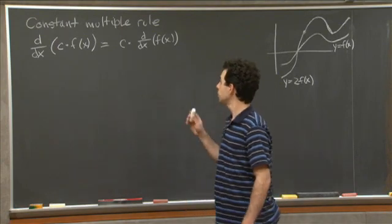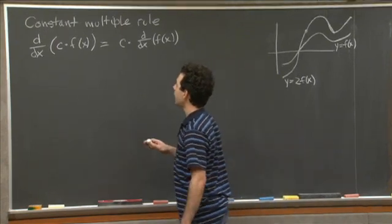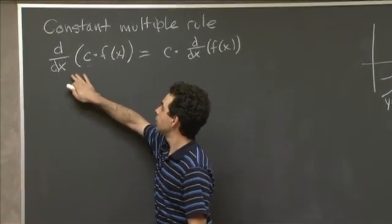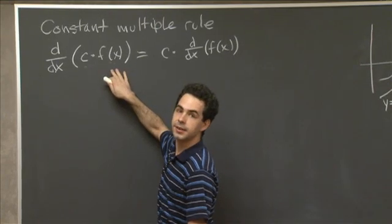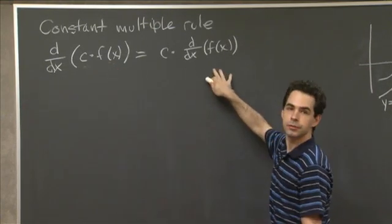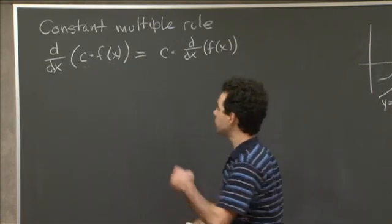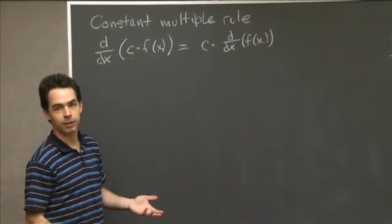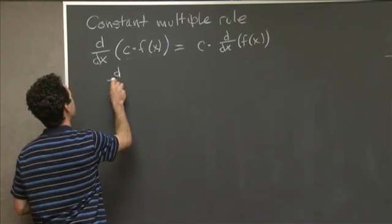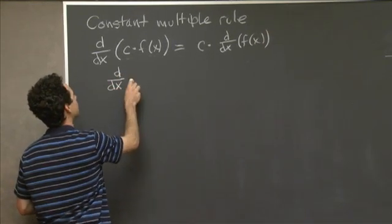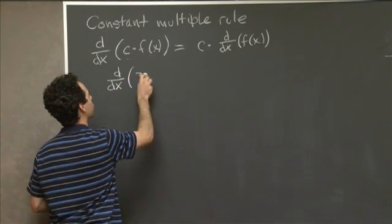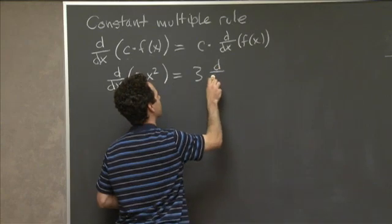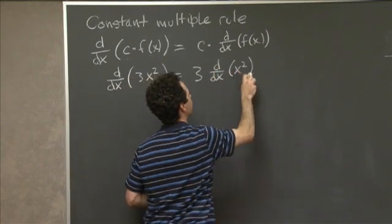The constant multiple rule says that if you have a constant c and a differentiable function f of x, the derivative of the function c times f of x is equal to c times the derivative of f of x. So just to do a quick example, suppose that c were 3 and f of x were the function x squared. This says that the derivative d by dx of 3x squared is equal to 3 times the derivative d by dx of x squared.